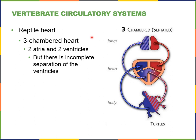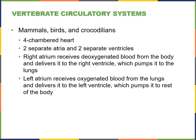The reptile heart is similar — they also have a three-chambered heart with two atria and two ventricles, but there is not a complete separation of the ventricles, so mixing still occurs. Getting into more recent evolutionary history, mammals, birds, and crocodilians all have a four-chambered heart — two separate atria and two separate ventricles. The right atrium receives deoxygenated blood going through to the right ventricle, pumping it to the lungs, then bringing back oxygenated blood to the left atrium, through the left ventricle, and pumping that to the rest of the body.